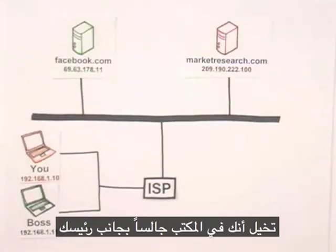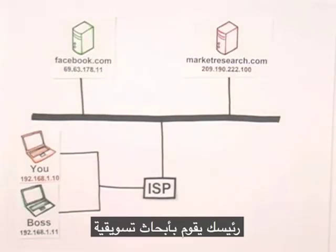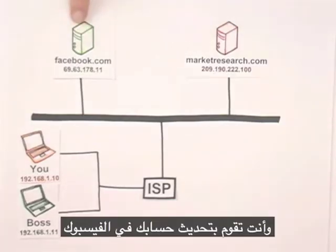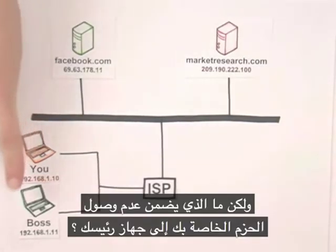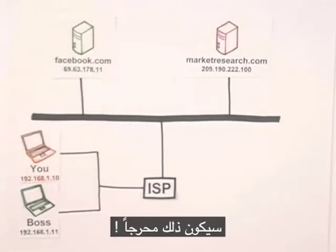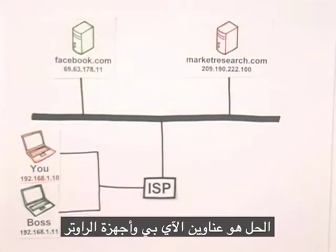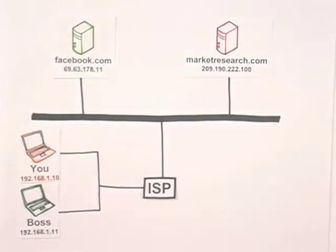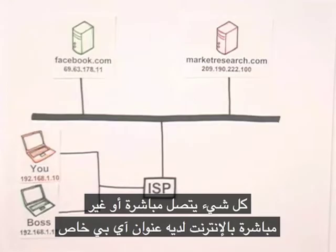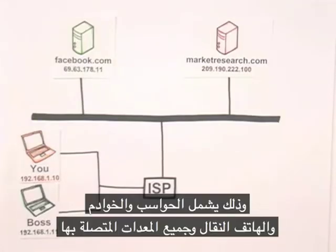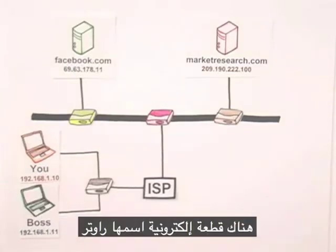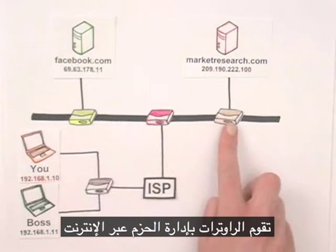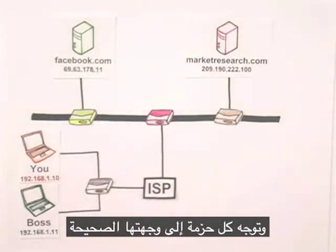Imagine you're at work sitting next to your boss, and you're both surfing online. Your boss is doing market research, and you're updating your Facebook profile. You're both sending packets back and forth over the Internet. But what's to keep your packets from accidentally ending up on your boss's screen? That could be embarrassing. The solution to that problem is IP addresses and routers. Everything connected directly or indirectly to the Internet has an IP address — everything. That includes your computer, servers, cell phones, and all of the equipment in between. Anywhere two or more parts of the Internet intersect, there's a piece of equipment called a router. Routers direct your packets around the Internet, helping each packet get one step closer to its destination.